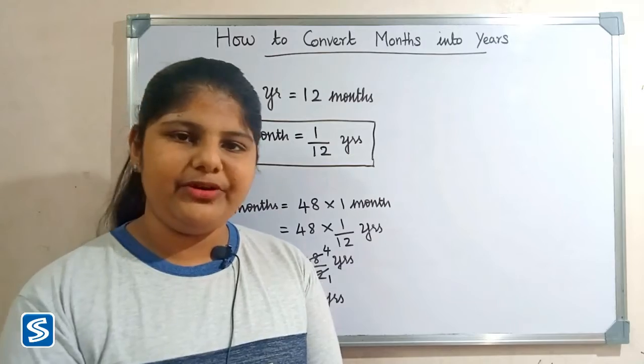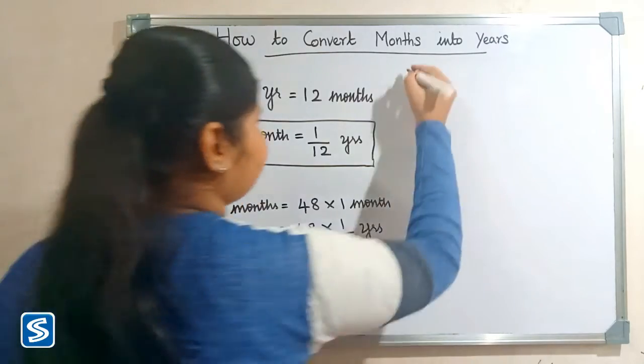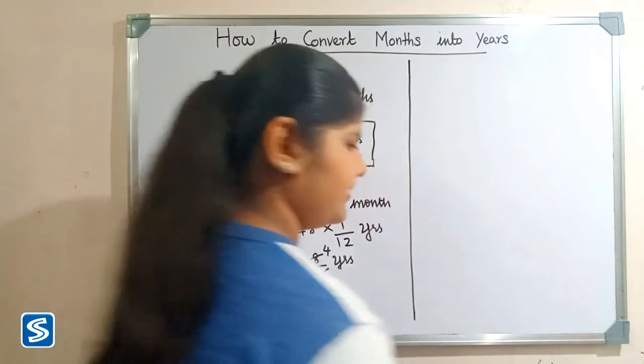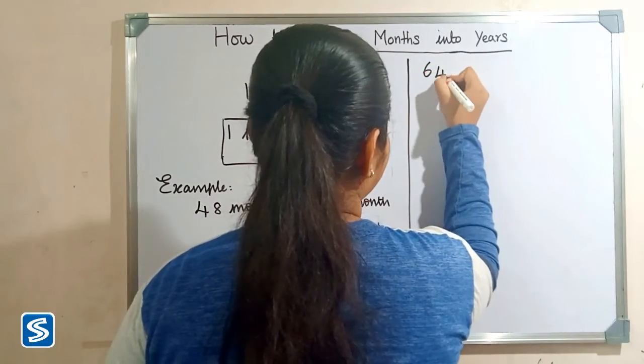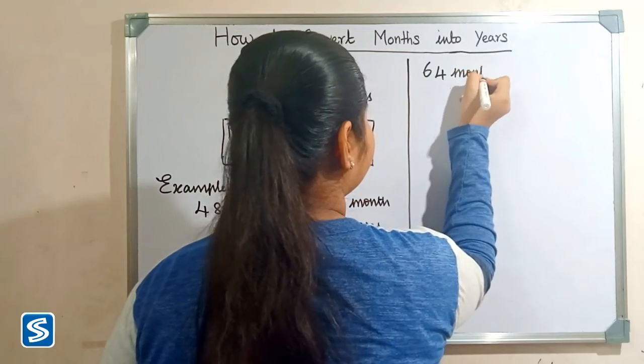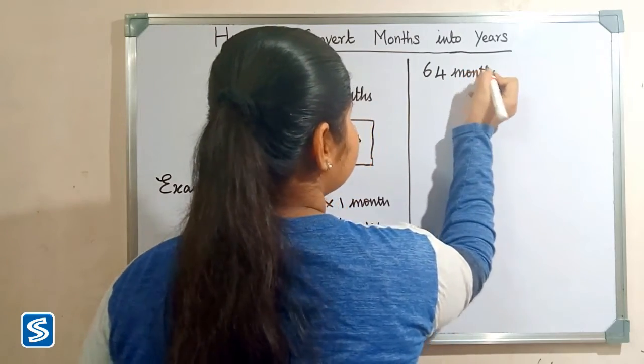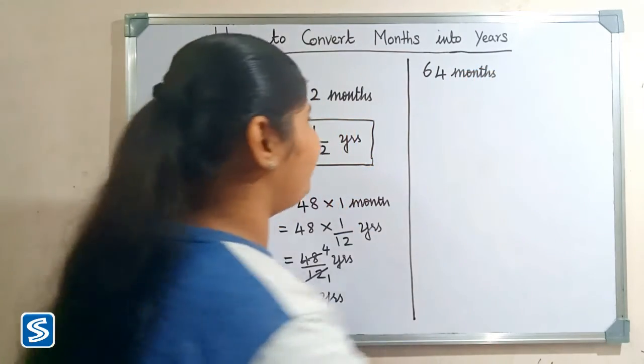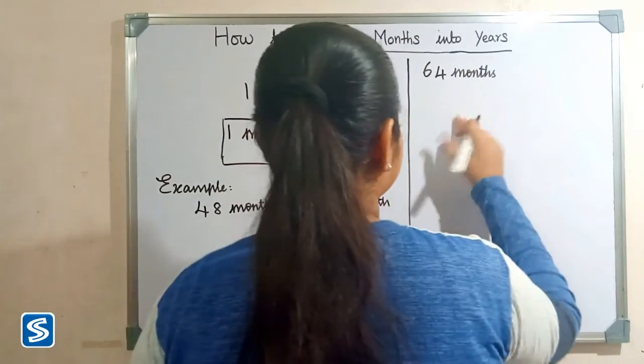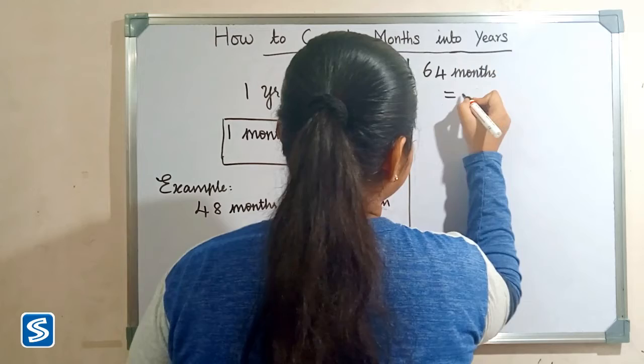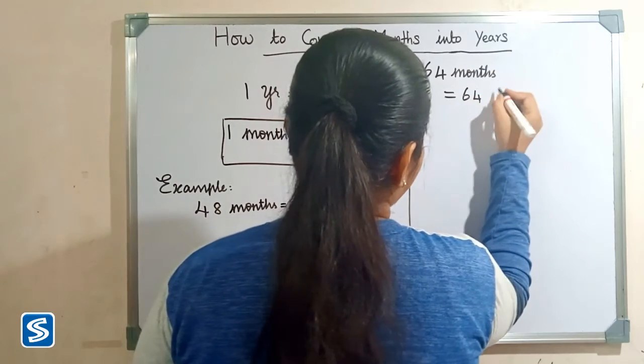Next we will take one more example: 64 months. Now we have to find how many years are there in 64 months. 64 months can be written as 64 × 1 month.